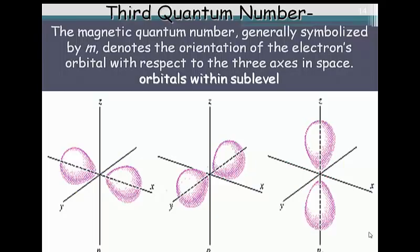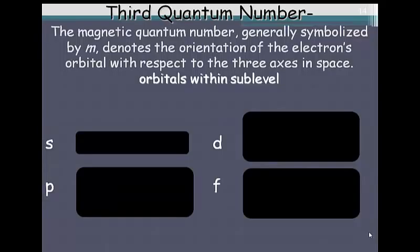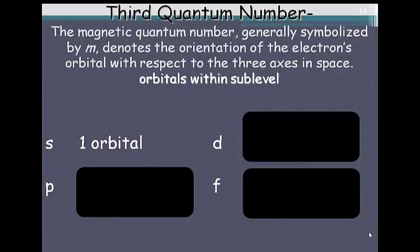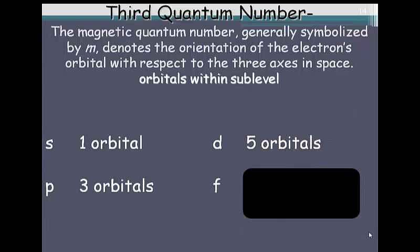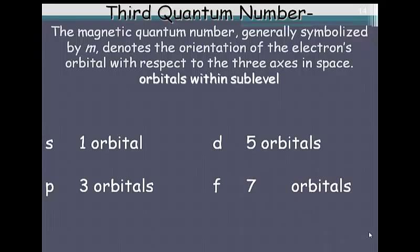The third quantum number, called the magnetic quantum number, is symbolized by a letter M. And what this tells us is the orientation of the electron within the orbital itself in relation to the three axes. So, within the S sublevel, we have one orbital. One orbital can only contain no more than two electrons. That's why the S can only have two electrons. The P, however, has three orbitals, each potentially containing a maximum of two electrons for a total of six. In the D orbital, or the D sublevel, there's five orbitals, each holding two, potentially holding a total or maximum number of 10 electrons. In the F sublevel, we have seven orbitals, holding a maximum total of 14 electrons.